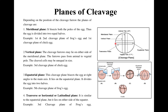The equatorial plane bisects the egg at a right angle to the main axis. It lies on the equatorial plane and again divides the egg into two halves. The example is the fifth cleavage plane of the frog's egg. The fourth type is the transverse, horizontal, or latitudinal plane, which is similar to the equatorial plane but lies on either side of the equator. The example is the third cleavage plane of the frog's egg.